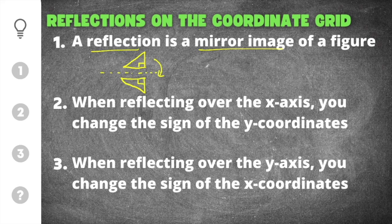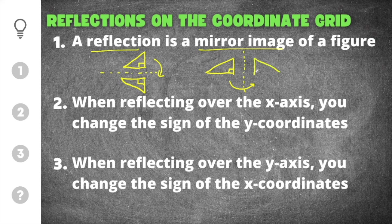The same goes for the y-axis, except the y-axis is the vertical axis. I can go ahead and draw another triangle to give you an example. The vertical axis here is the y-axis, and this can be reflected across that axis as well, creating a mirror image on the other side. These reflections can go in both directions — top to bottom, bottom to top, or right to left and left to right.